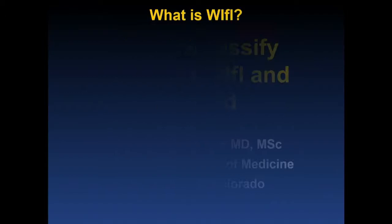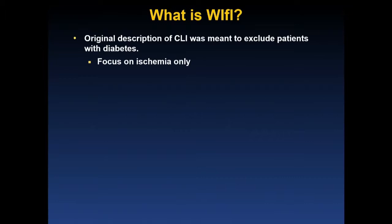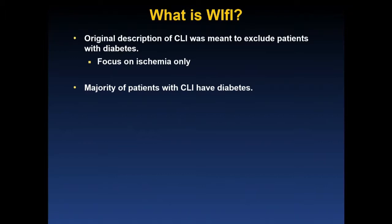So what is the WIfI score? If you look back at the original descriptions of critical limb ischemia, it was meant at the time of description to exclude patients with diabetes. The rationale for this was to focus on ischemia only as the etiology of non-healing arterial ulcers. However, the majority of patients with critical limb ischemia do have diabetes — in most series, between 50% and 70%.